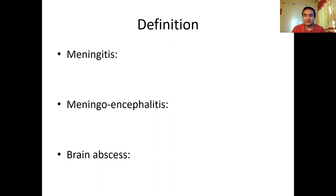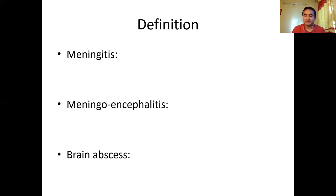In meningoencephalitis, besides meningitis there is also inflammation of the encephalon — the brain parenchyma. If there is inflammation of the brain parenchyma too, we call it meningoencephalitis. A brain abscess is an area in the brain parenchyma where there are inflammatory cells surrounded by a definite capsule.